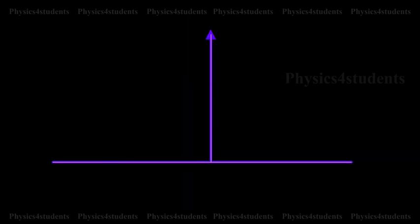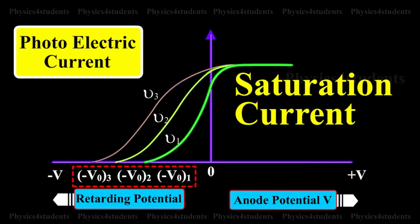The animation shows the variation of the photoelectric current with the applied potential difference V for three different frequencies. From the graph, it is found that higher the frequency of the incident radiation, higher is the value of stopping potential V0. For frequencies nu3 greater than nu2 greater than nu1, the corresponding stopping potentials are in the same order V0_3 greater than V0_2 greater than V0_1.